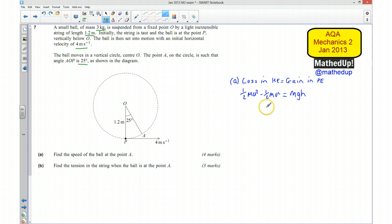So my loss in kinetic energy, that's going to be half MU squared take away half MV squared. And that's going to be equal to the gain in potential energy which is going to be MGH. I know what M is, that's 3 kilograms. I know U, that's my initial velocity which is 4 meters per second. I'm trying to work out what V is. I know M and G, but I need to know what H is. Now H is this distance here. So we need to know how much higher it is to where it started.